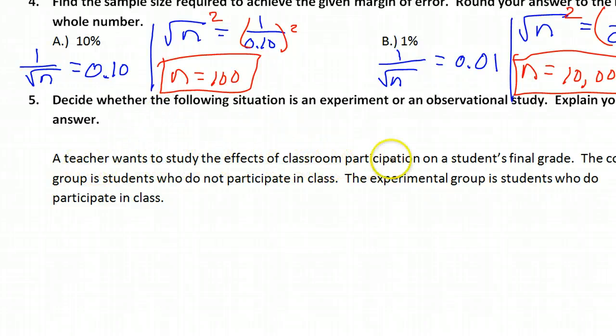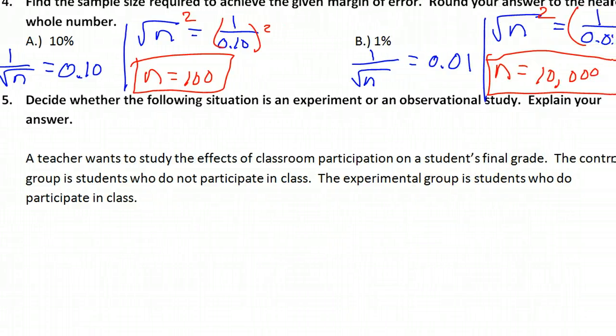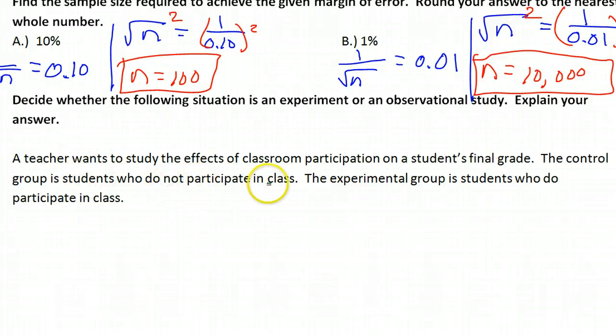A teacher wants to study the effects of classroom participation on a student's final grade. The control group is a group of students who do not participate in class. The experimental group is students who do participate in class. I'm not super comfortable with the way this question is worded, but they're just talking about somehow observing students who are either participating in class or not participating in class. It doesn't sound like the teacher is doing anything to the students except for recording their grades. This would be an observational study because it's not like the teacher is somehow forcing some kids to participate and forcing other kids to not participate. The kids are just doing what they do.